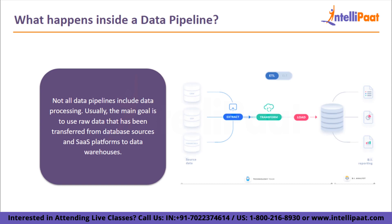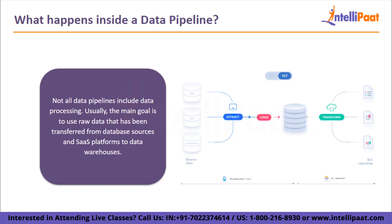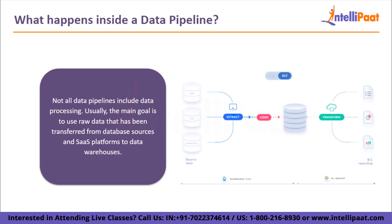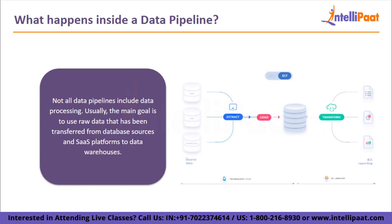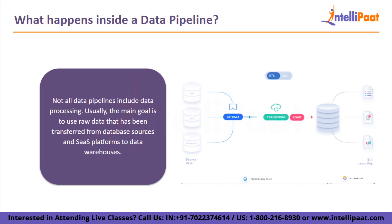Not all data pipelines include data processing. Usually, the main goal is to use raw data that has been transferred from database sources and SaaS platforms to data warehouses. However, the data engineering pipeline's responsibilities frequently include processing or transforming the data in some way. This is due to the possibility that the raw data loaded from a source may not be accurate or useful. In order for it to be useful at its next node, it must be modified. The data engineering pipeline improves end-to-end speed by removing errors and thwarting bottlenecks or delays.